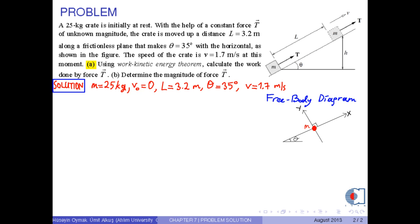The gravitational force on the body is like this. Secondly, since the crate is in contact with the surface, there is a normal force perpendicular to the surface. Finally, force T is drawn as it is.